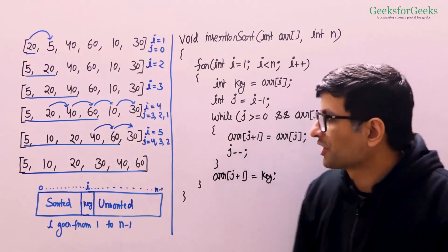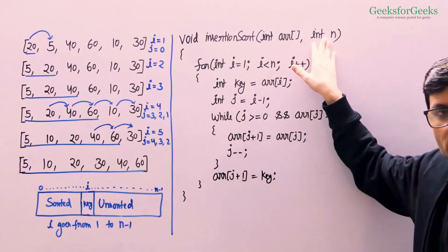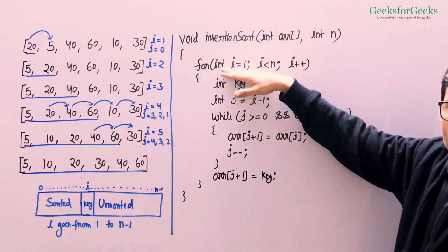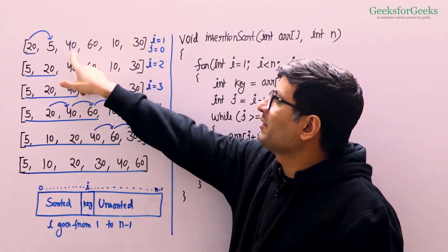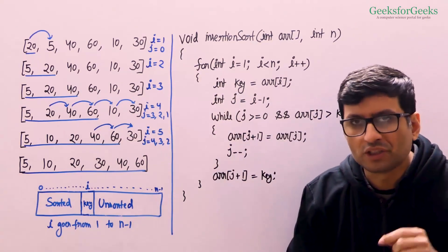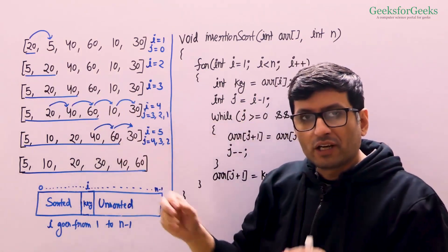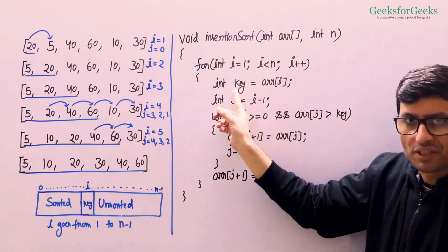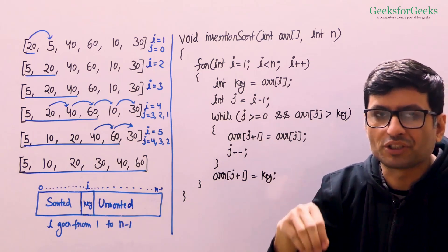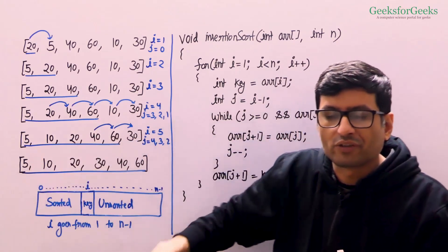Here is the implementation of insertion sort. We have a function that takes an array and the size of the array as arguments. Inside this function, we run a loop from 1 to n-1. For every element, we first store it in a variable called key, then go to its left side to find its correct position in the sorted array. After finding the correct position, we increase the sorted part.